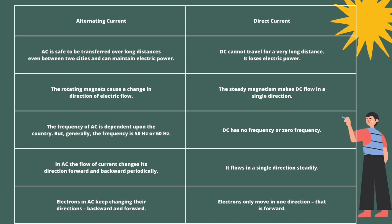Electrons are what generate electricity. In AC, electrons keep changing their directions backward and forward, which is why the flow of current changes its direction periodically. In direct current, electrons only move in one direction — the forward direction — which is why DC loses electric power over long distances.